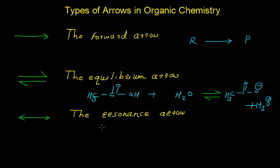The third arrow is the resonance arrow. This is generally used to show the interconversion between the resonance forms of the molecule.